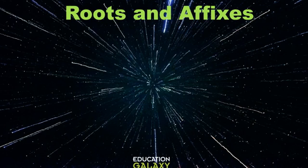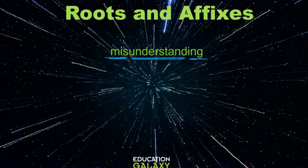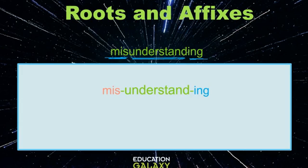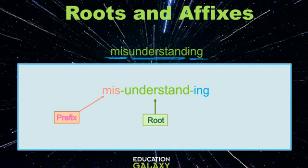Let's look at another word — this is a very big word: misunderstanding. If you look closely you will see that it is made up of three parts. In different colors: you have the root understand right in the middle, and then you have the prefix mis at the beginning. Mis means incorrect, so misunderstand means to understand incorrectly. But this word also has a suffix — ING makes a verb into a noun, so misunderstanding means incorrect understanding of something or some idea.